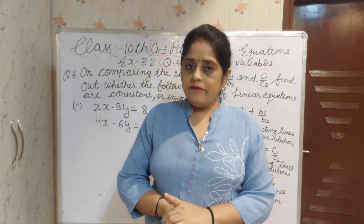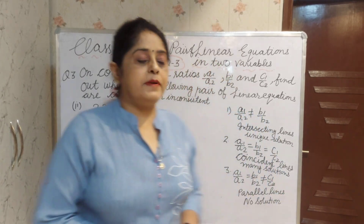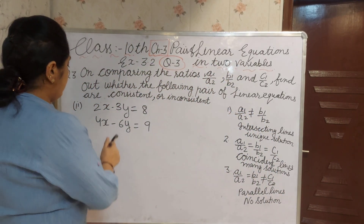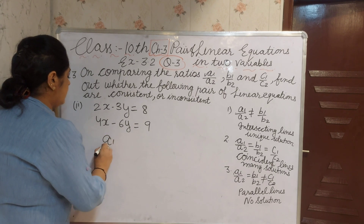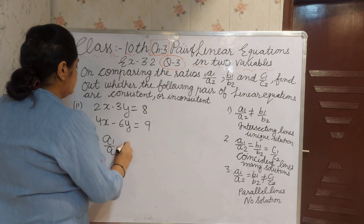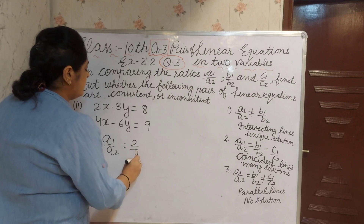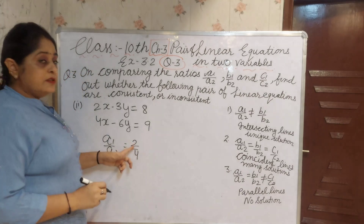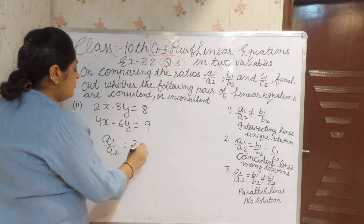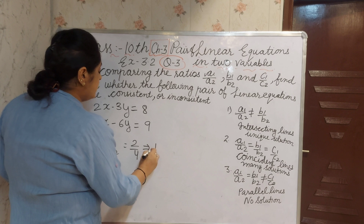Now I will explain the third sum, second part. A1 by A2 is 2 by 4. You can reduce the term by table of 2, and you will get 1 by 2.